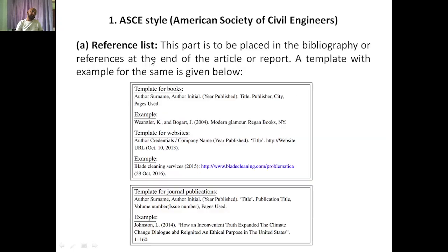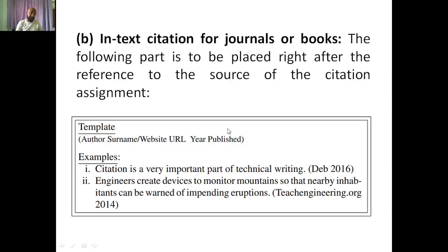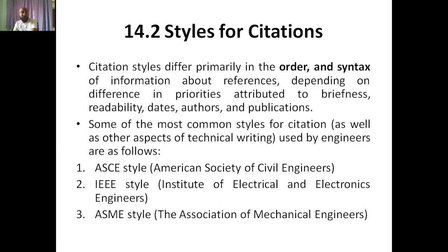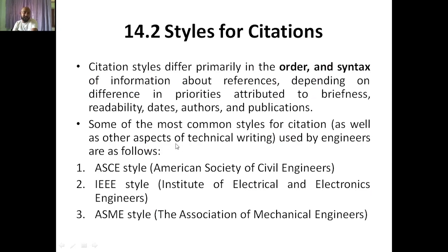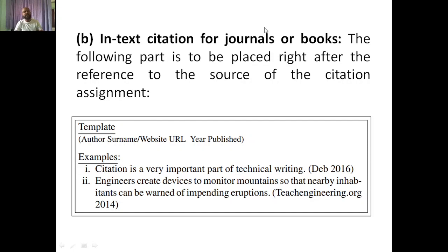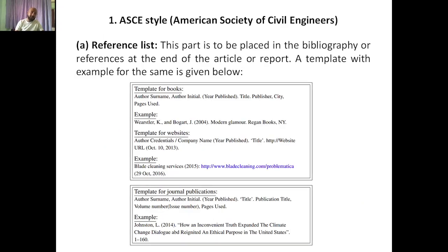That was about ASCE reference list format. Now, for in-text citation in ASCE — in the paragraph you write something, and within it you put the citation number. For example, I have put '20' here — that refers to item 20 in the reference list. In ASCE, text citation of journals or books is placed right after the reference source. For example: 'Citation is a very important part of technical writing' — who said that? It was mentioned in an article published by Dev in 2016. You cite that work in-text, and for full details go to the reference list.